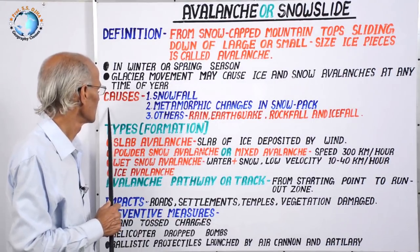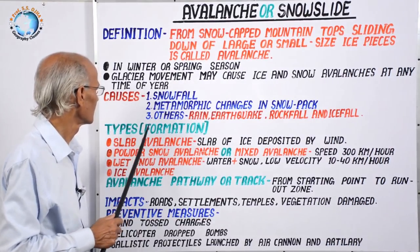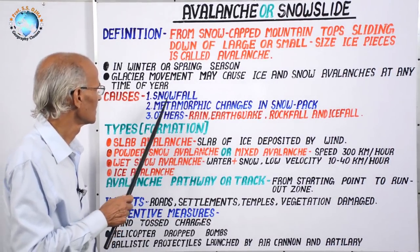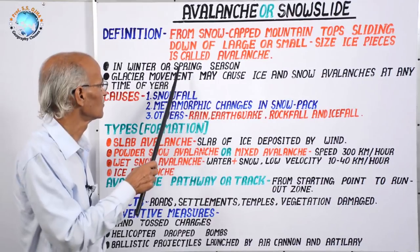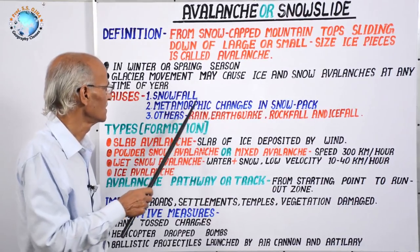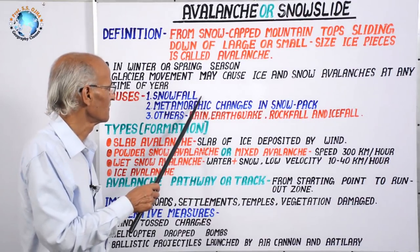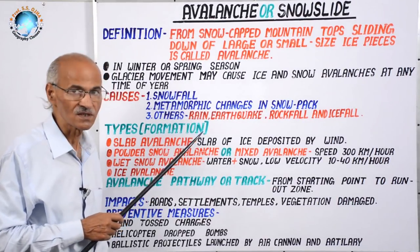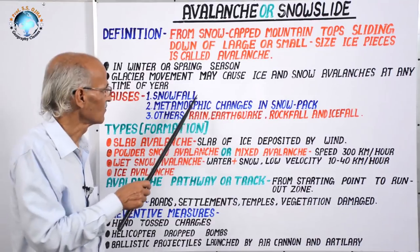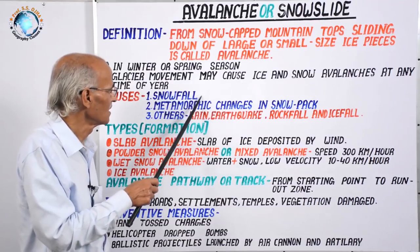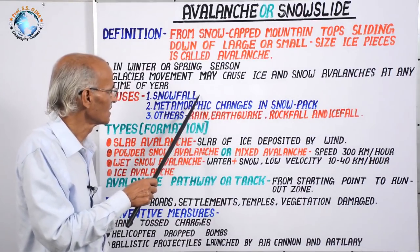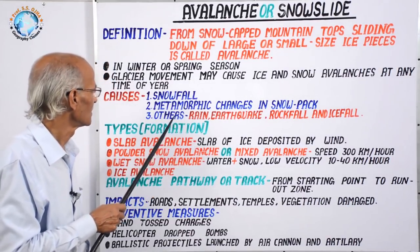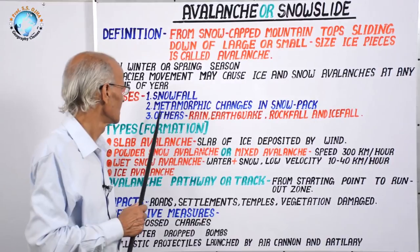Now let us come to the causes of avalanche. The first cause is snowfall. In winter and spring season, snowfall occurs and as a result avalanche takes place.